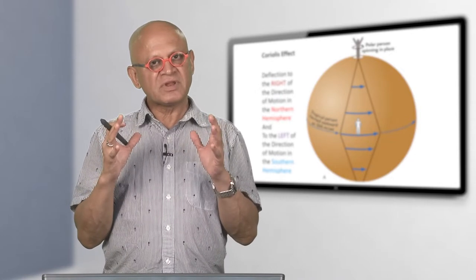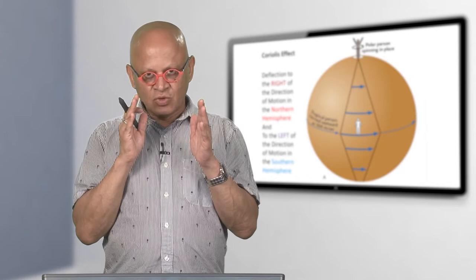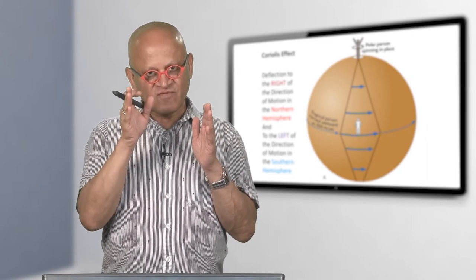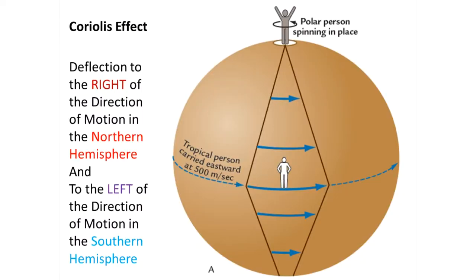In the northern hemisphere you are deflected to the right of the direction of motion — if going northward you are pushed east, if going south you are pushed west. In the southern hemisphere it is exactly opposite: you are pushed to the left of the direction of motion.